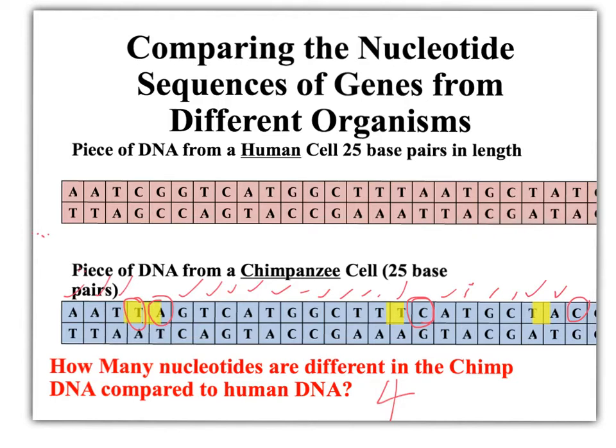This is because mutations or changes to DNA happen randomly over time. So the closer together two organisms are in terms of relatedness, the more recently they have evolved into separate species. Therefore, there has been less time for mutations to change their sequences of DNA.